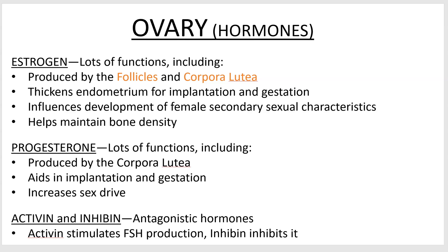Estrogen - we're all familiar with the name at least - has lots and lots of functions. Some of its main functions are: it thickens the endometrium, which is the inner layer of your uterus that needs to be thick and vascularized for the embryo to implant and gestate. Estrogen also helps develop female secondary sexual characteristics like breasts, wider hips, and less hair. It also helps females maintain bone density by limiting calcium removal from the bones.